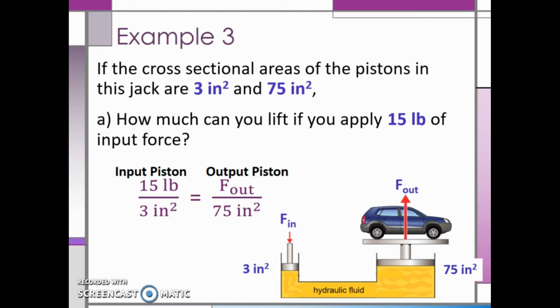We can multiply the two numbers we have on the diagonal: 15 pounds multiplied by 75 square inches, and then divide by what we have left over, which in this case is 3 square inches. This tells us that the output force is 375 pounds. An output force of 375 pounds makes sense since the larger the area of the piston, the larger the force applied.